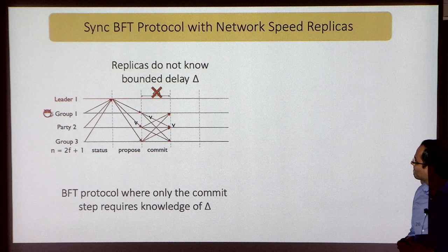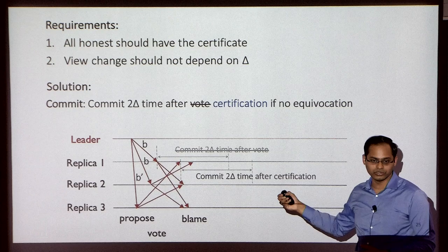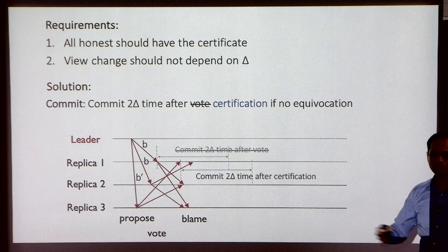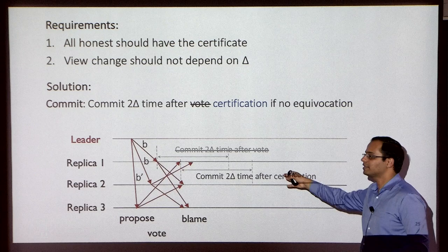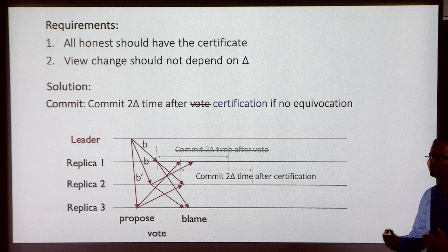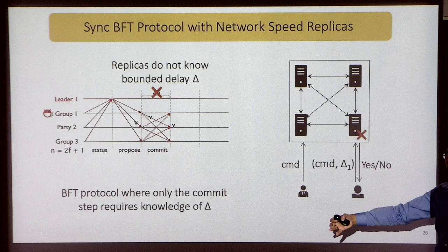We assumed a fixed time delta in our analysis, but observe that delta is only used when committing to a value — not before, and not during view change. That is why you can run all execution except for the equivocation check without knowing delta. If you ever receive an equivocation, you maintain data on when equivocations arrived and respond to clients accordingly. This is how we provision different clients with different deltas.